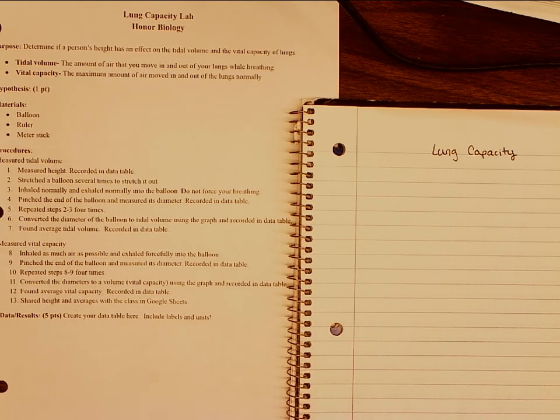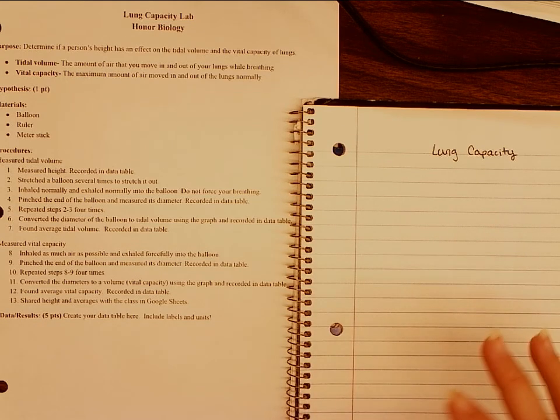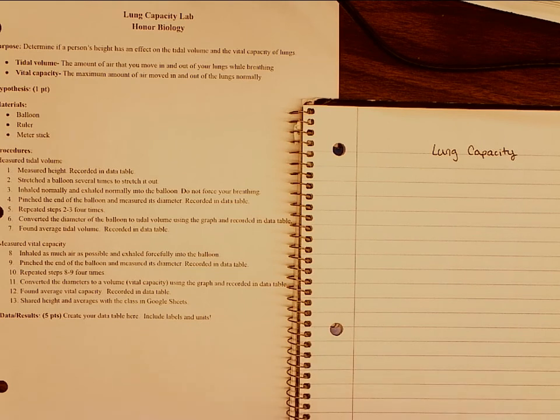So as you guys know, just like in physical science, data tables are going to be really important for every experiment. If we have them set up, we will be able to do the experiment and have everything recorded nicely and organized in a very simple way using a data table. Now when we're reading through our procedures, anytime we see record in the data table, we need to have a spot to record in the data table.